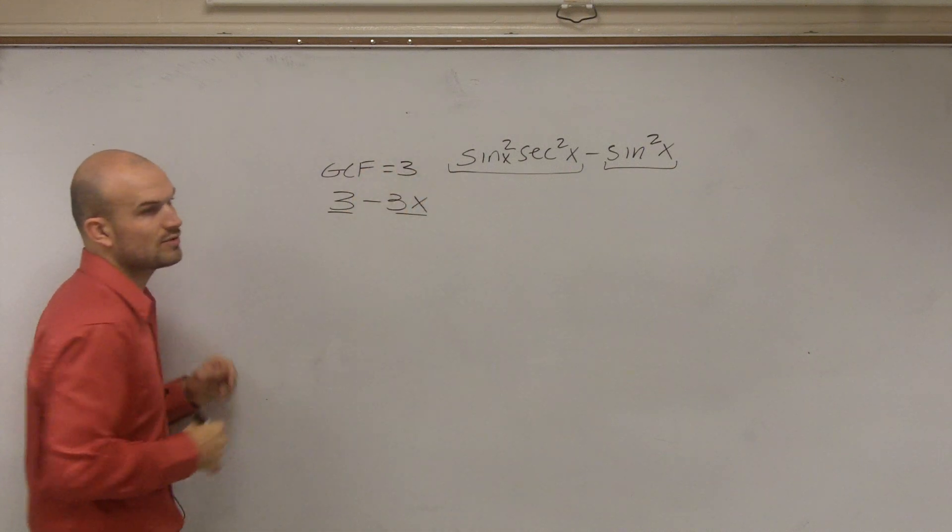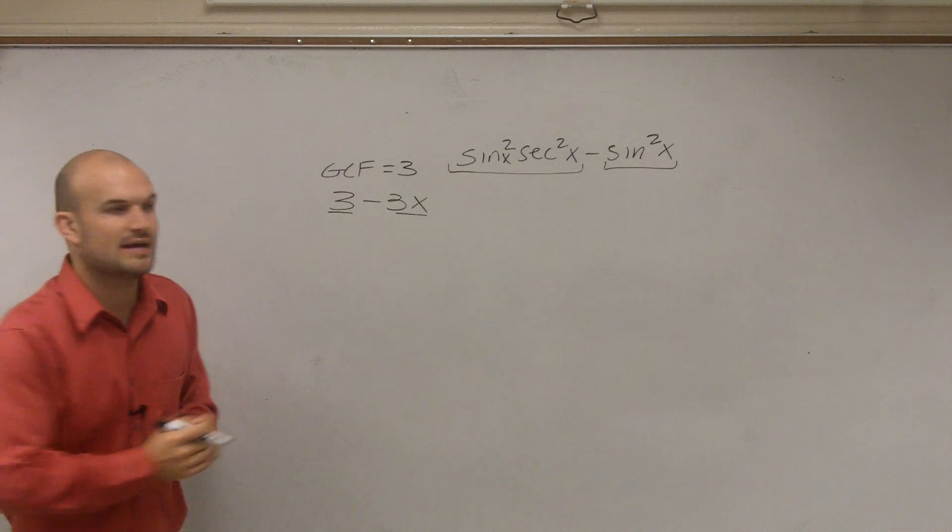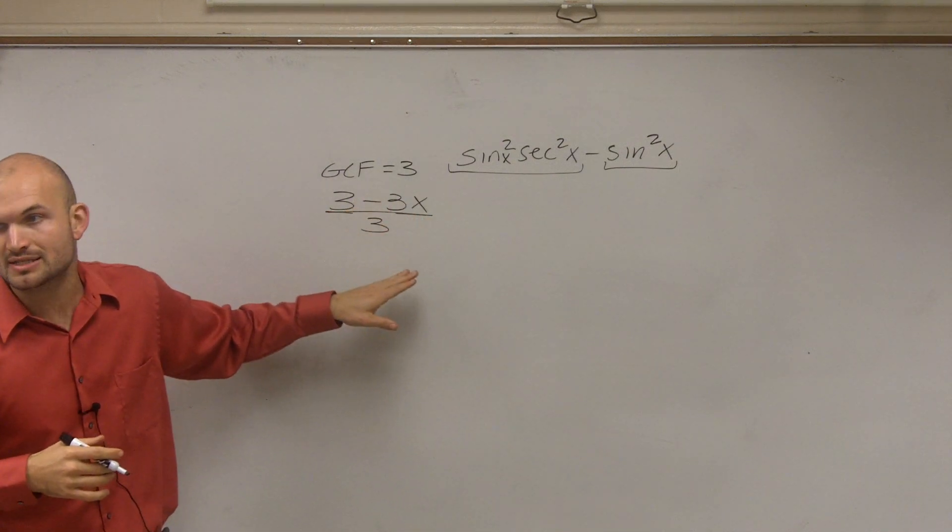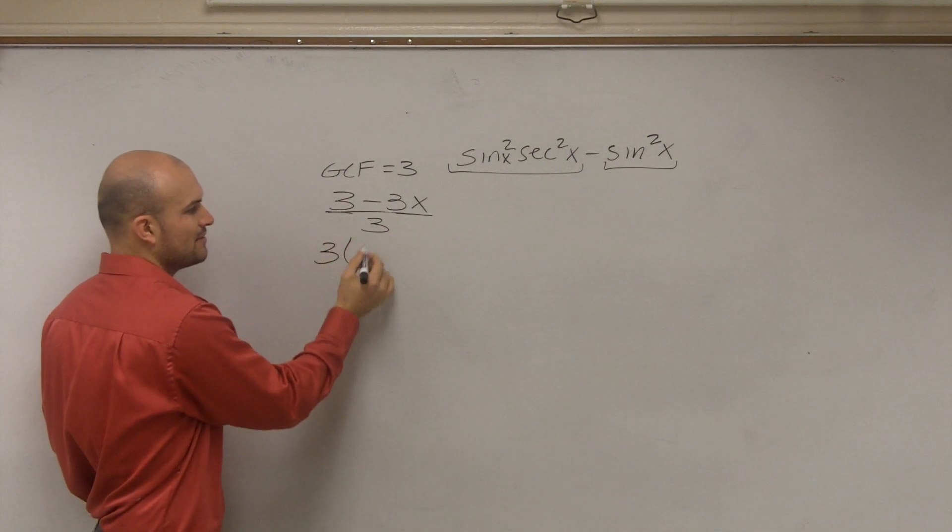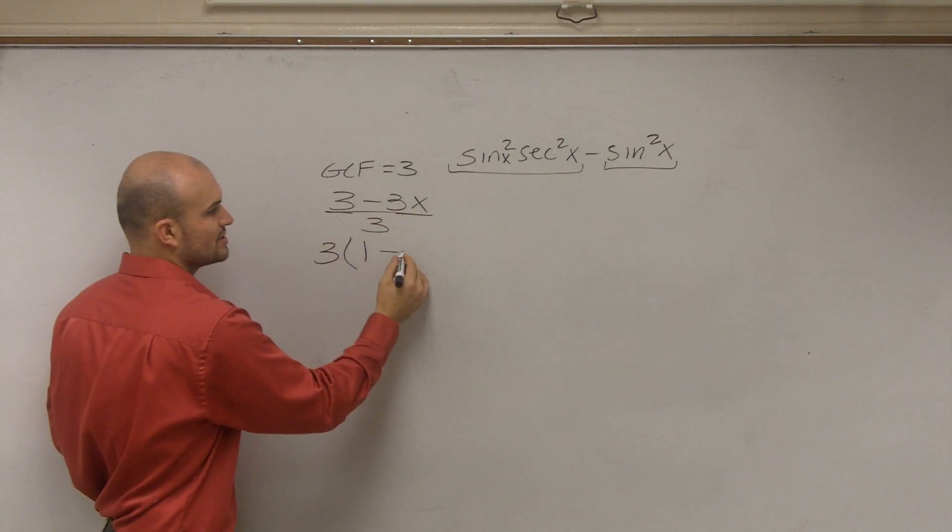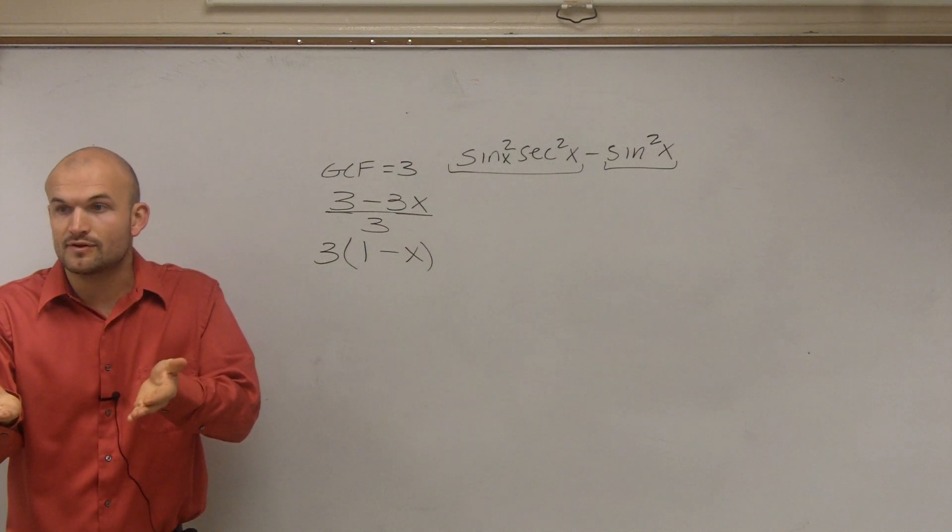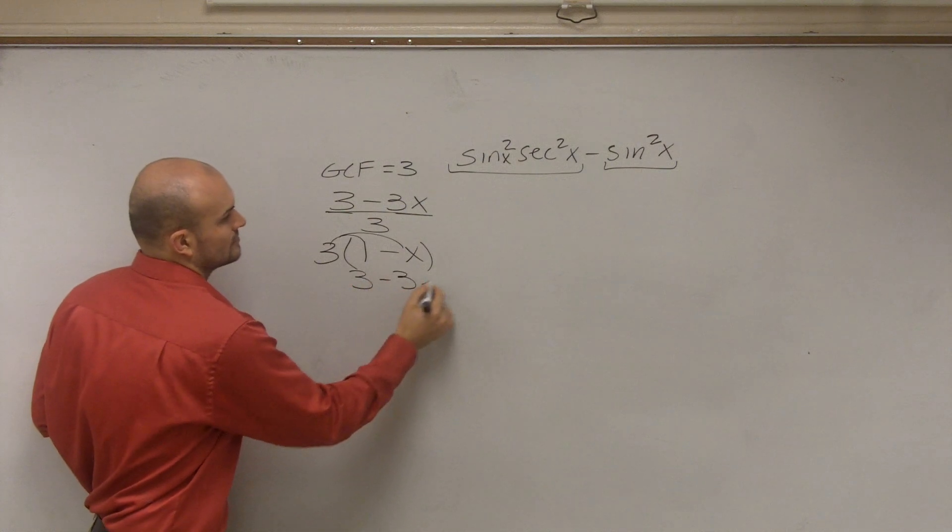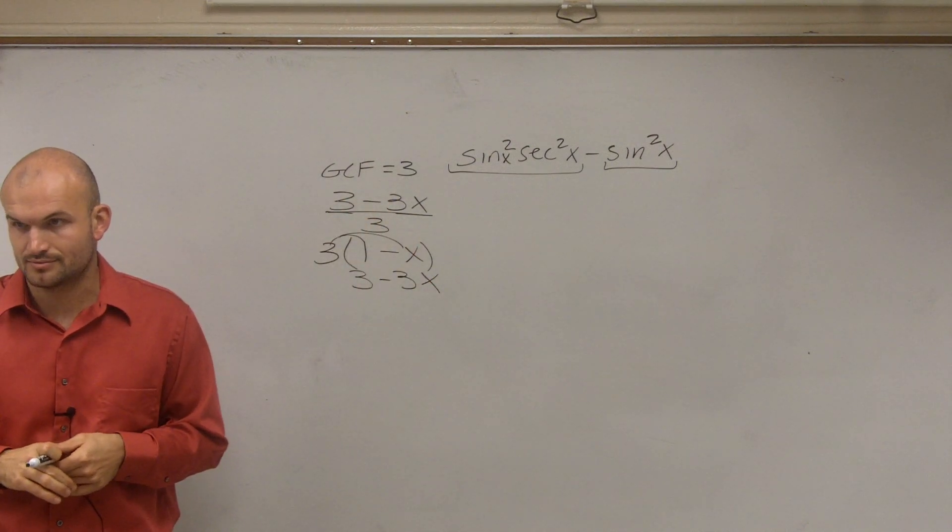So we said the greatest common factor was 3. So then how do you factor once you know the greatest common factor? What you do is you divide each term by your greatest common factor. So therefore, the factored form was 3 divided by 3, which is 1, and negative 3x divided by 3, which is negative x. You could always check if your factored form was correct by using the distributive property. Does everybody follow me on the review?